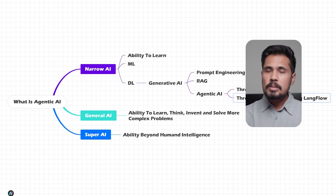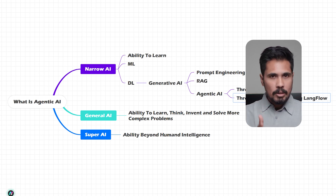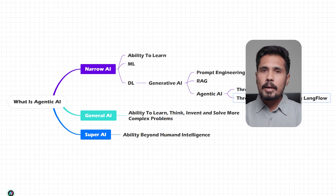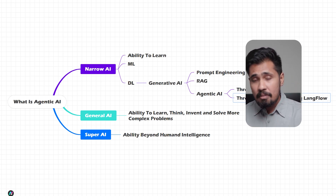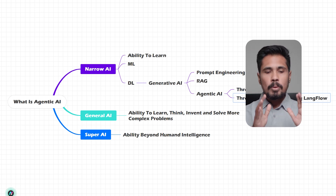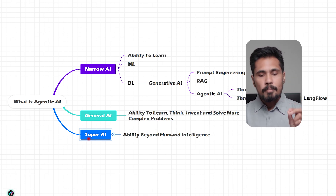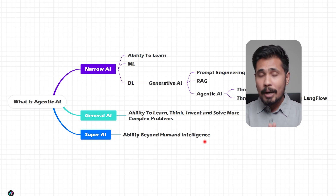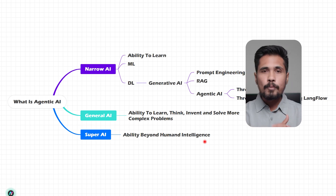Currently we are in the era of narrow AI. Whether you are using agentic AI or generative AI, whatever AI you name it, we are in the era of narrow AI. Companies are investing a lot of money on general AI — they may get there or they may not. It's a research area. General AI is the ability to learn, to think, to invent, and even to solve complex problems greater than a human. Beyond that is super AI — anything beyond human intelligence. Researchers say we may reach super AI around 2050.